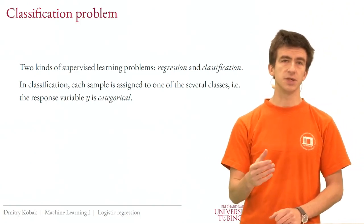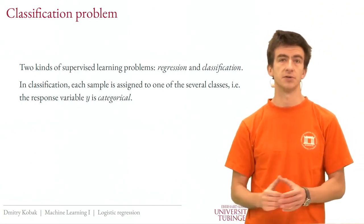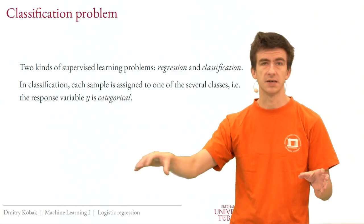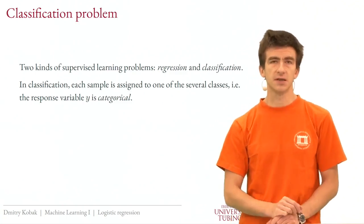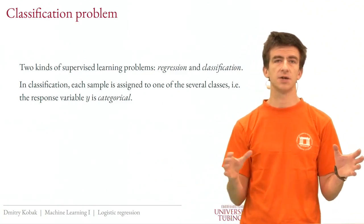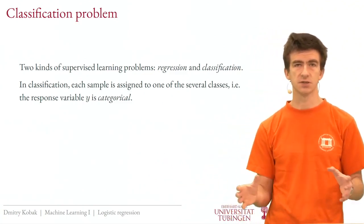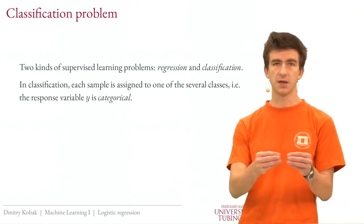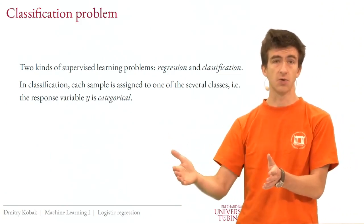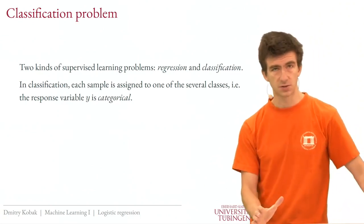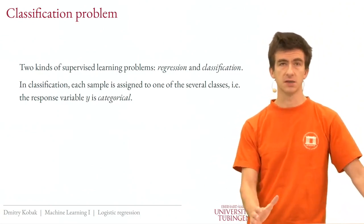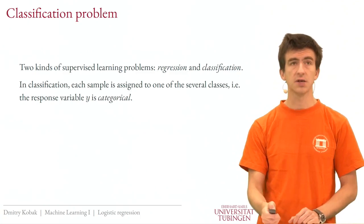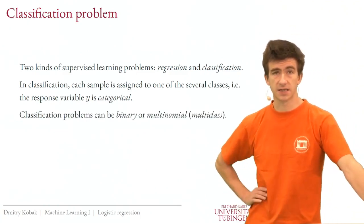We can think of the response variable in classification as being a categorical variable — a variable that takes values in the set of cat, dog, crocodile, panda. It's important that these are discrete categories and that there is no order on them. The crocodile is as far from a cat as from a panda. We don't assume any ordering, because you can have discrete values that are ordered like integers, but that is not what we are going to talk about. In all these classification lectures, we assume that the categories are unordered and the response variable Y is categorical.